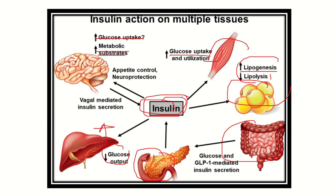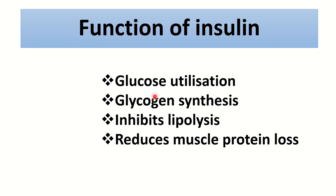In muscle, glucose uptake increases and glucose is converted into glycogen and stored. In fat cells, lipogenesis occurs and lipolysis decreases. So any food material in the blood is immediately removed by insulin. The first action of insulin is to remove all food materials — carbohydrates, proteins, and fats — from the blood to different organs and tissues for utilization.